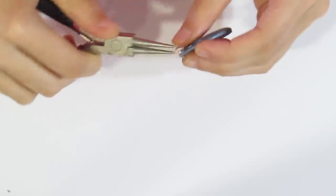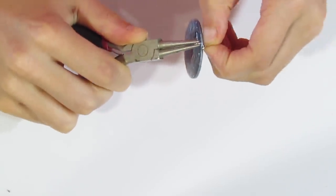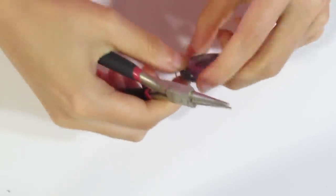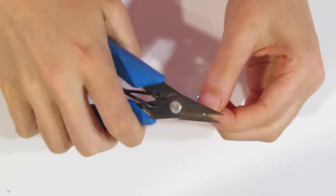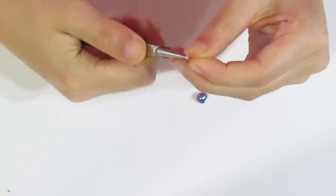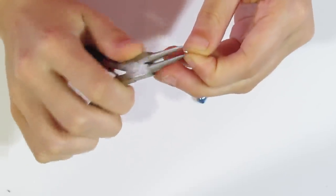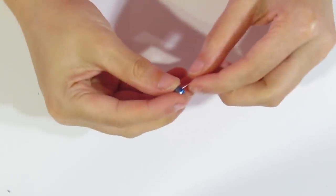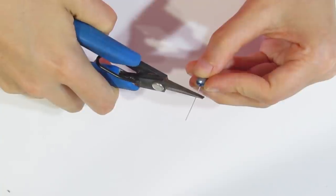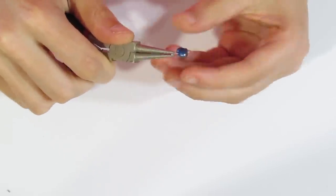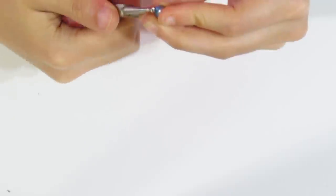Grab a jump ring and fit that through the hole. Just close that up. Now I want to attach one of these freshwater pearls to the top. It's not necessary, but it adds a nice accent to the piece. Make a little rounded loop, attach your pearl, snip off the top, and repeat the loop. There we go.